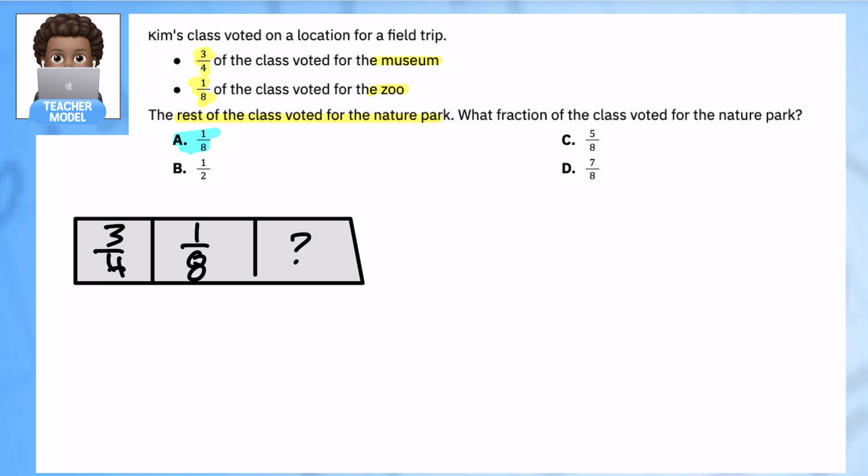So the first thing, remember, we're adding up these two parts that we have, and then we're going to subtract from one since the whole class would be one whole class. So we're going to add three fourths plus one eighth, but they have different denominators. So the first thing you should have done is just change it so they have the same denominators.